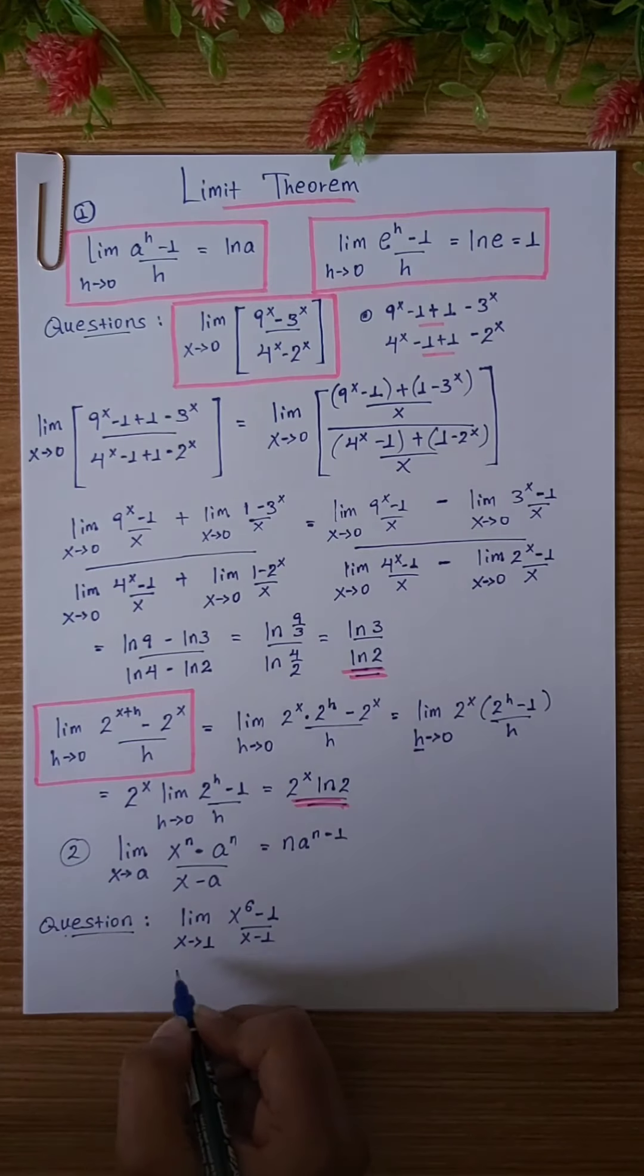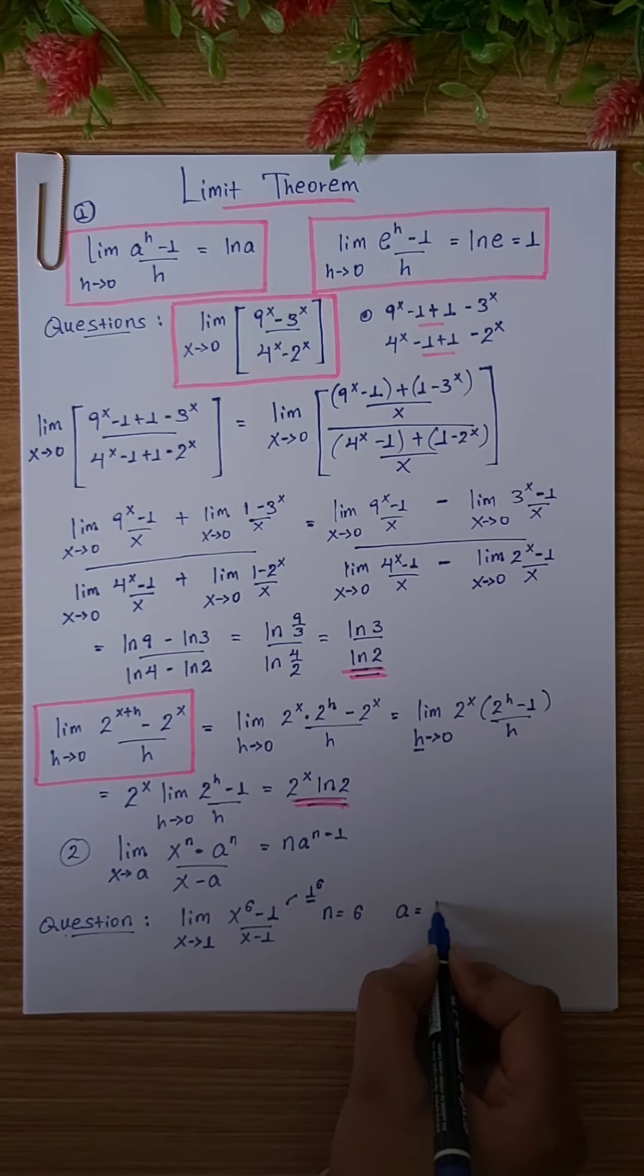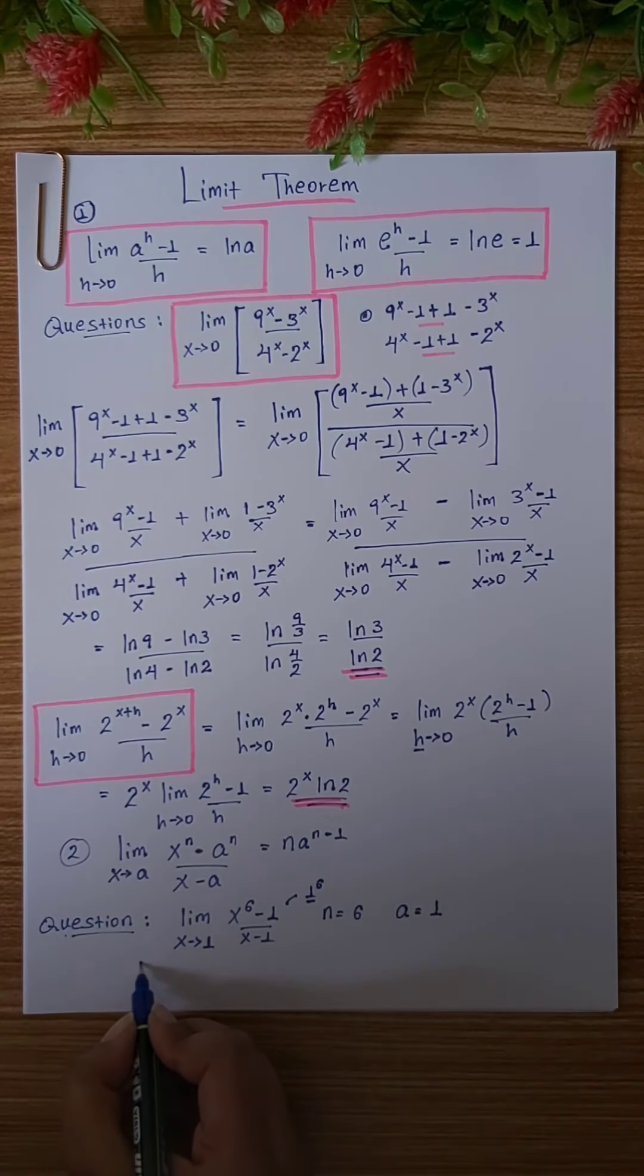For example, the limit of x to the power of 6 minus 1 over x minus 1 as x tends to 1, where n is 6 and a is 1, gives 1 to the power of 6.